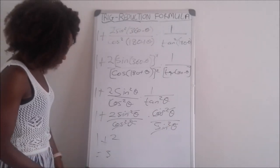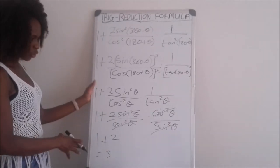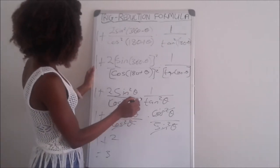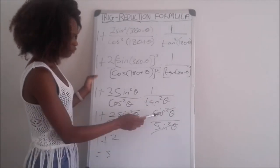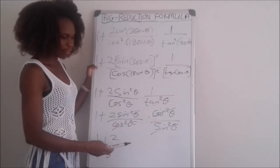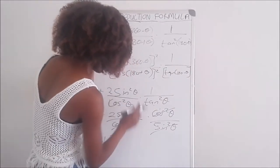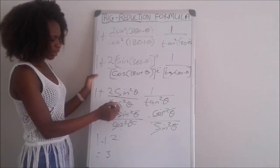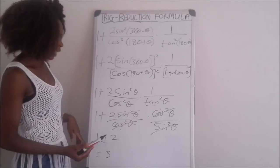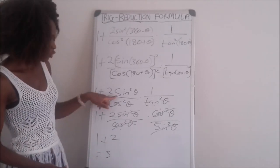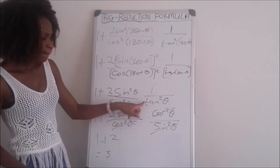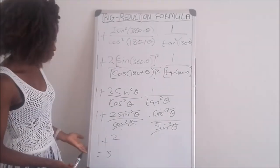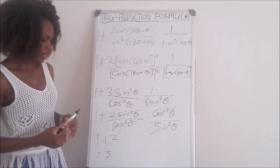Alternatively, from the step where we have 1 plus 2 sin squared theta over cos squared theta, you could recognise that sin squared theta over cos squared theta equals tan squared theta. That gives 1 plus 2 tan squared theta multiplied by 1 over tan squared theta, where the tan squared terms cancel, and you are still left with 1 plus 2, which gives 3.